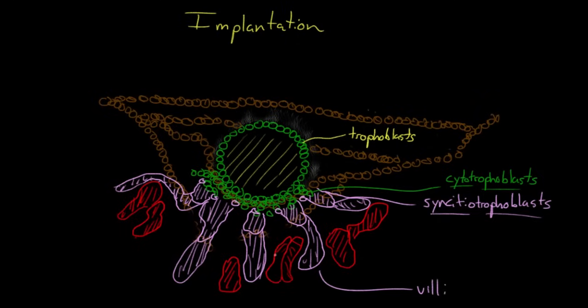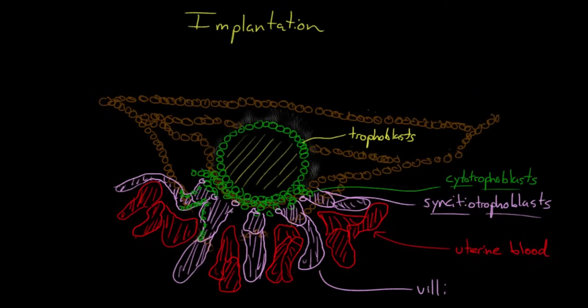But the uterine blood vessels, which are now really just pools of blood, continue to grow and fuse as well. Over time, these structures continue to grow. You get more cytotrophoblasts that line the edges of these villi as they creep out into the endometrium.